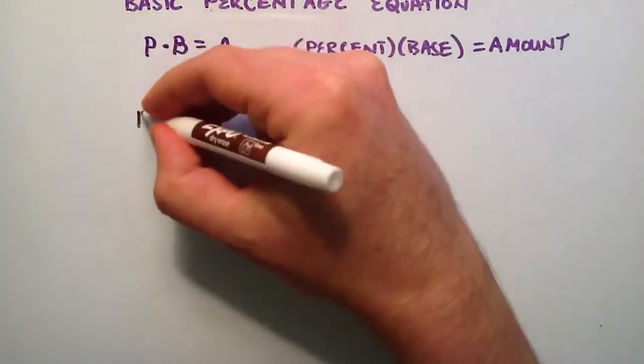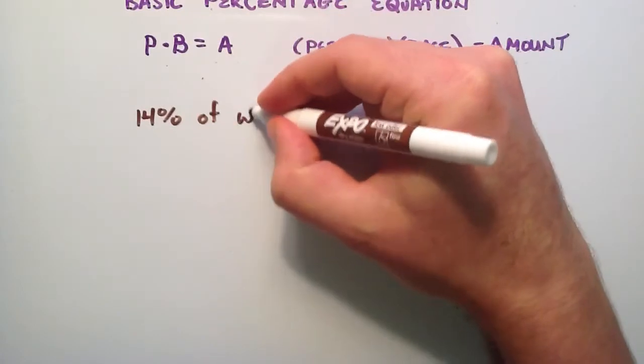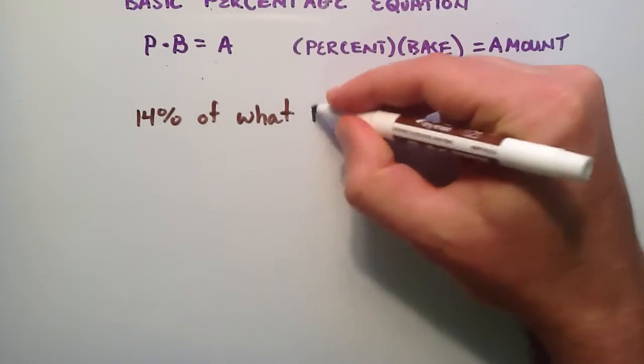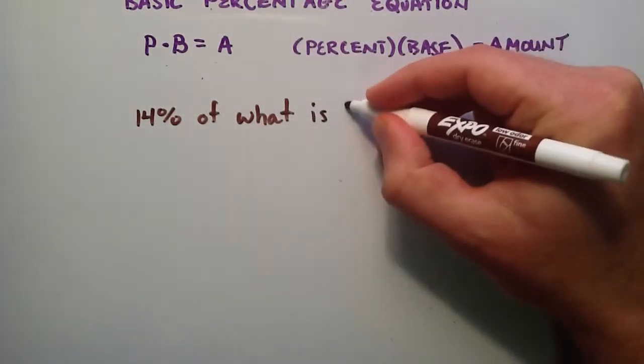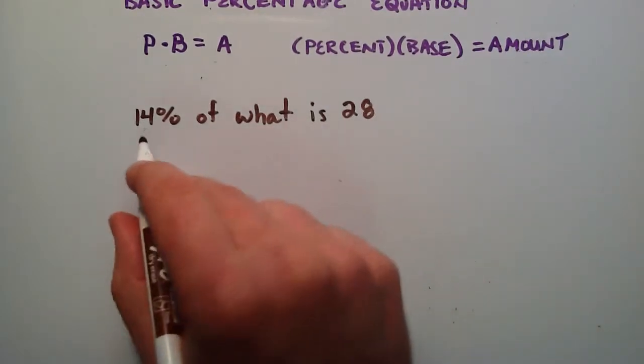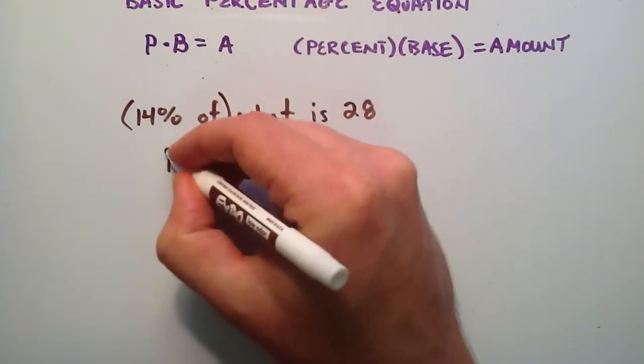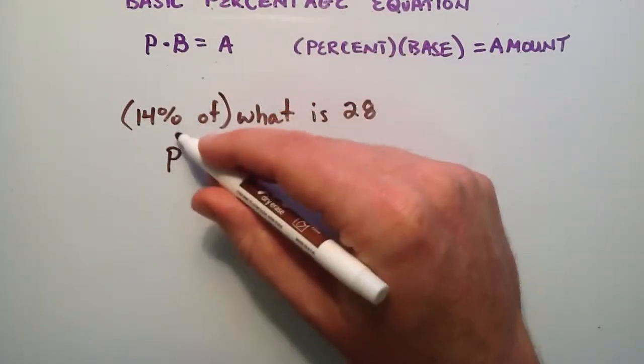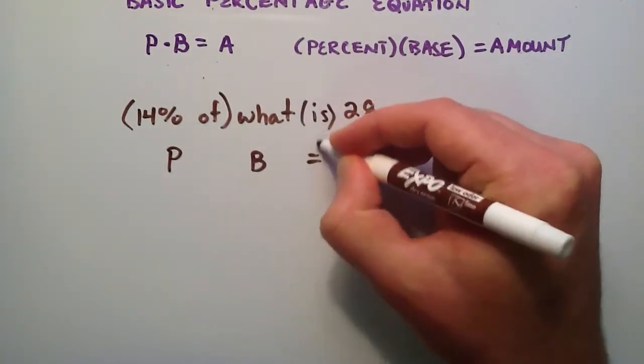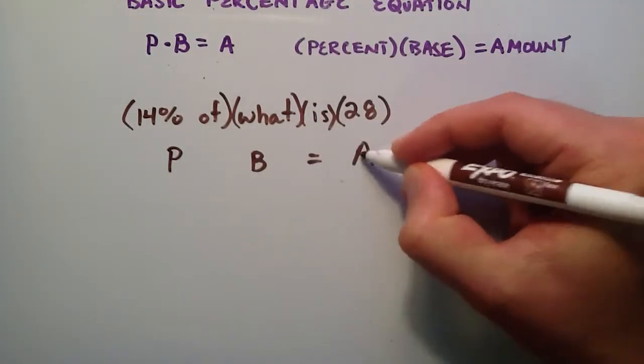Let's do a second example of this method. This time we have 14% of what equals, or is rather, 28. I could have put equals there, it would have been the same thing. Here's our percentage once again. 14%, the percent of, so this is our P. The percent of what? The percent of the base is our equals. The what was the base, and 28 is our amount.